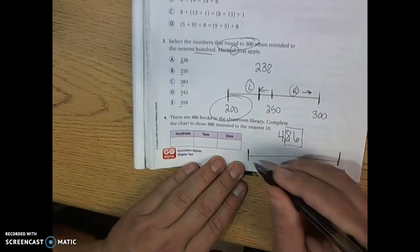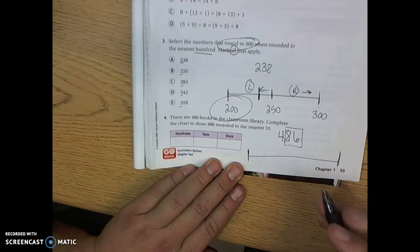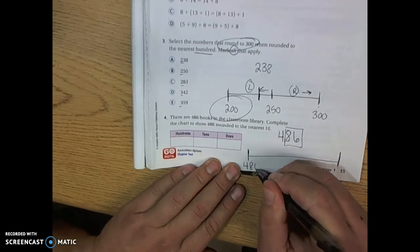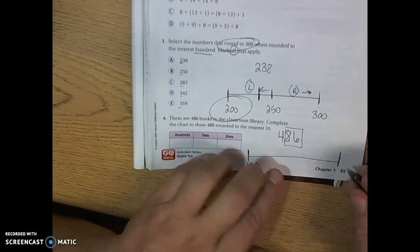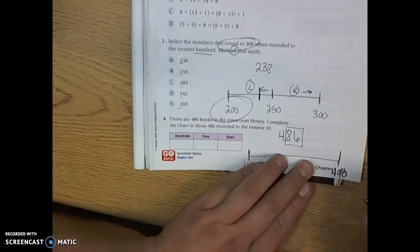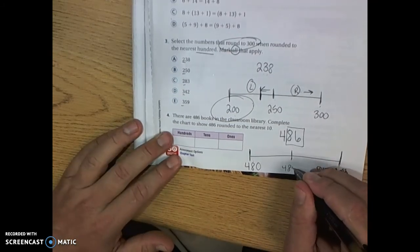You make your timeline. What number is going to be on the low side? What number is going to be on the high side? The low side is going to be 480. The high side is going to be 490. Then we ask ourselves what number is in the middle? It's 485.